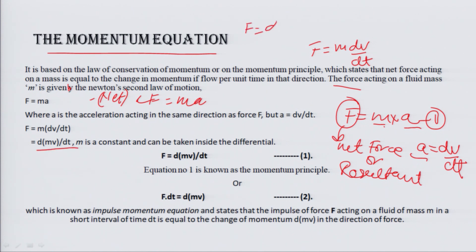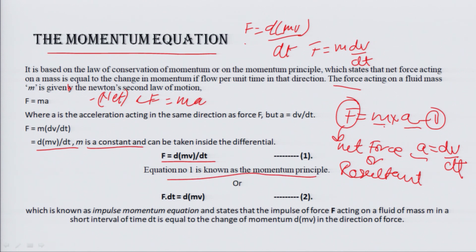This can be written as F equals d(mv)/dt. Since mv equals momentum, and m is constant and can be taken inside the differential, equation 1 is known as the momentum principle — the rate of change of momentum.